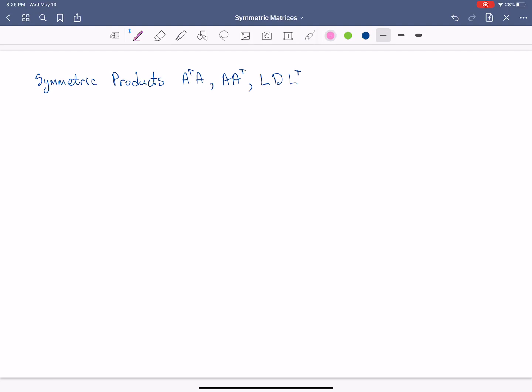Two obvious examples, all three of these are actually very easy to see. So I'm just going to prove very quickly that all three types that we have here, A transpose A, A A transpose, and then LDL transpose, I'll explain what that means. They're all symmetric.